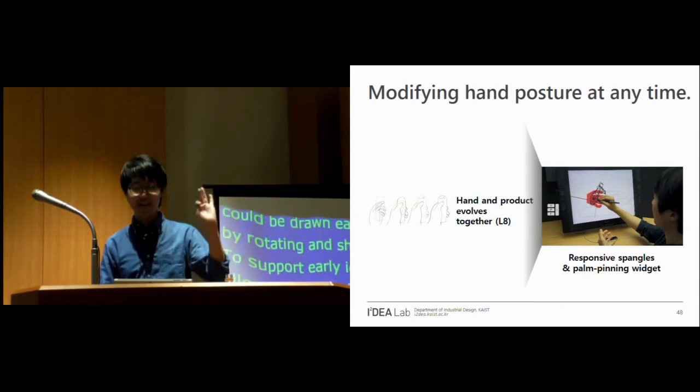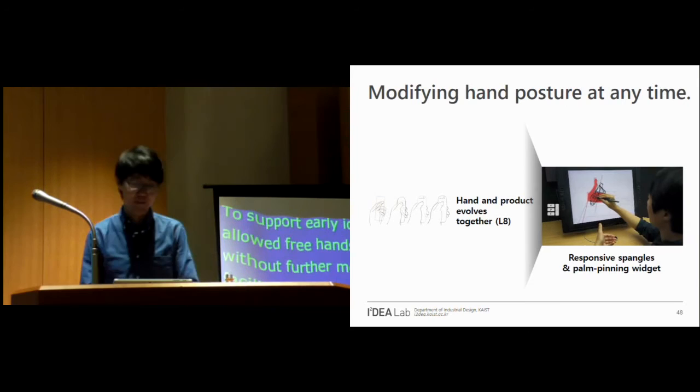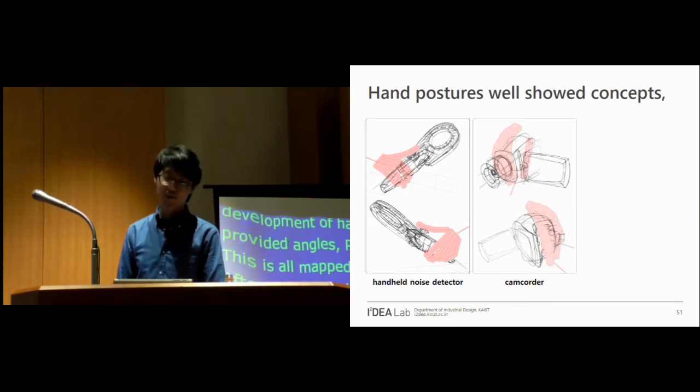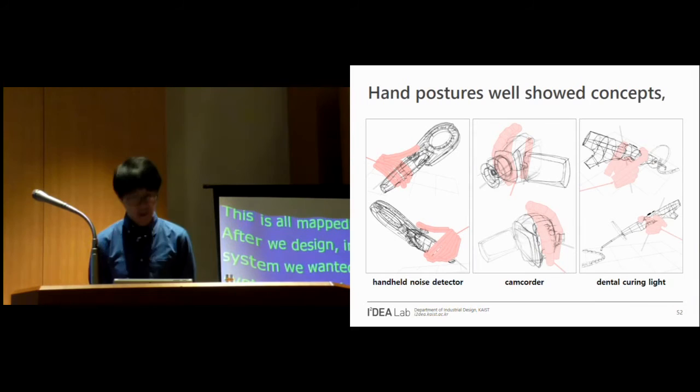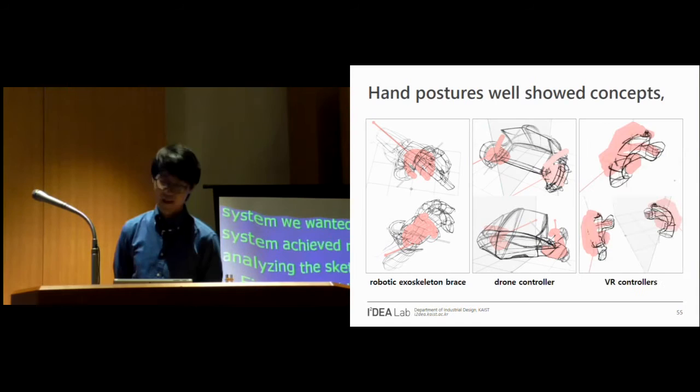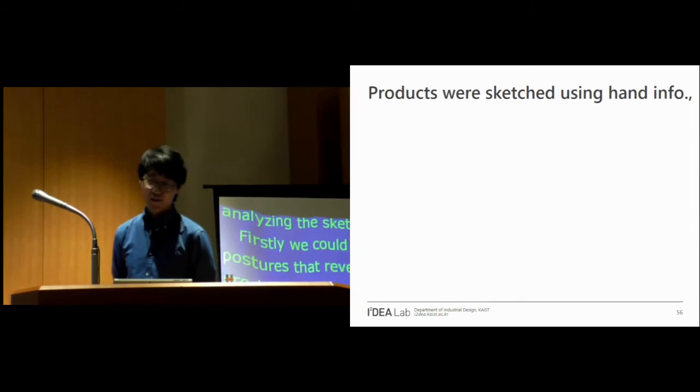So after we designed, implemented, and tested our system, we wanted to verify how the system achieved our research goals by analyzing the sketch outcomes. Firstly, we could find natural hand postures that reveal the scale and usage of products. The noise detector with a thumb joystick, the camcorder held by a right hand and controlled by a thumb, the dental light gripped by a right hand like a pen for delicate operation, the exoskeleton brace articulated by fingers, the drone controller with a display carried by both hands, and the VR controller with a thumb joystick and front buttons. And the user utilized their captured hand information to sketch products.